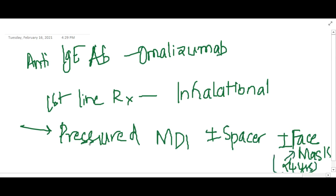If a child is less than four years, then we use this face mask. Or else we can just give pressurized metered-dose inhaler with spacer to older children. So how do you quantify? We have a stepwise treatment for bronchial asthma.